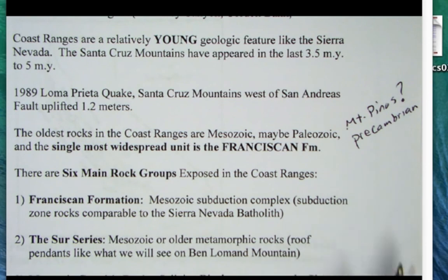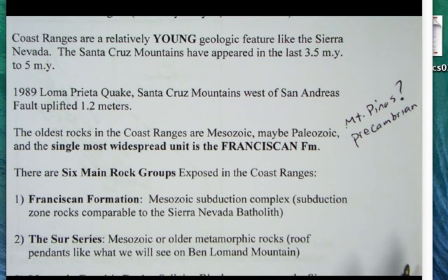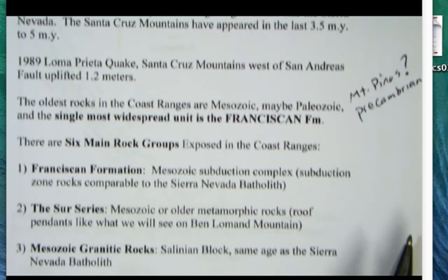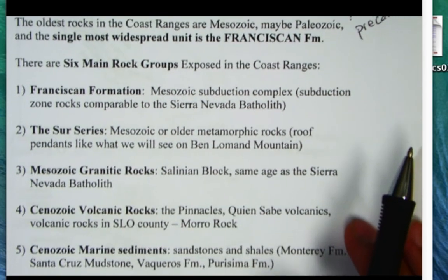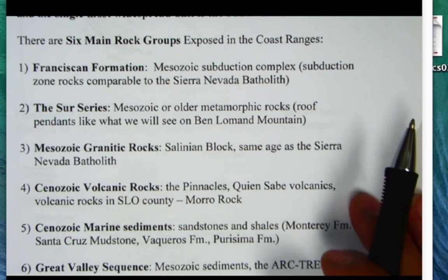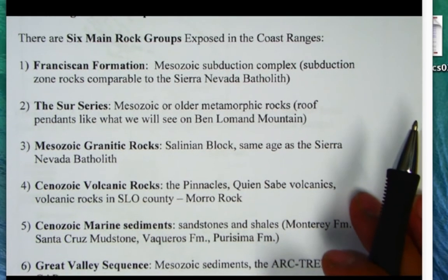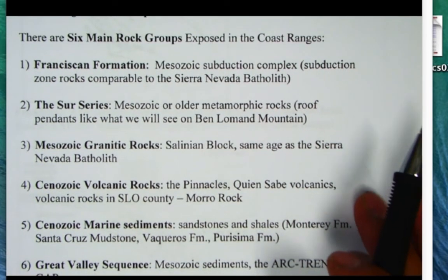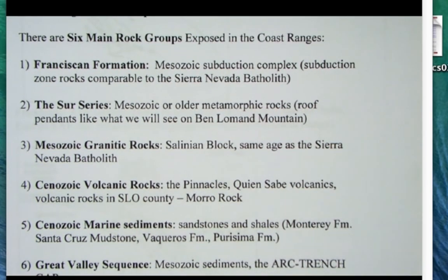Now before we start talking about the Franciscan Formation, I want to outline six — maybe seven — main rock units exposed in the Coast Ranges. The Franciscan Formation is, in fact, what the textbook calls the heart of the Coast Ranges.